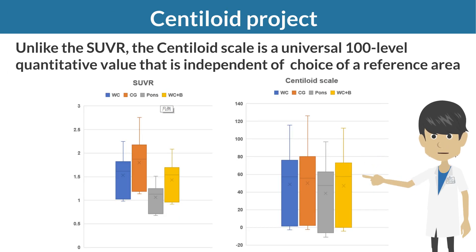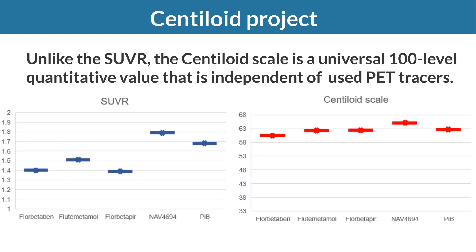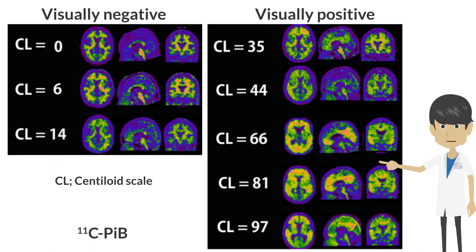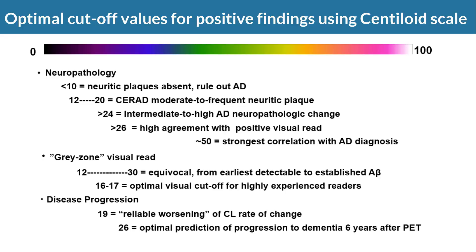Unlike the SUVR, the centiloid scale is a universal 100-level quantitative value that is independent of the PET tracer used. In sporadic Alzheimer's disease, amyloid accumulation begins in the posterior cingulate gyrus, precuneus, and frontal lobes, spreads to the temporal and parietal cortex, and finally to the striatum. Cases in the upper 10s to 20s on the centiloid scale are often associated with confusing positive and negative visual interpretations.